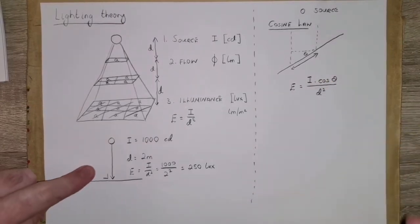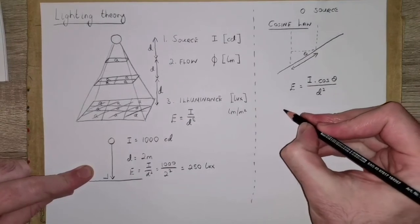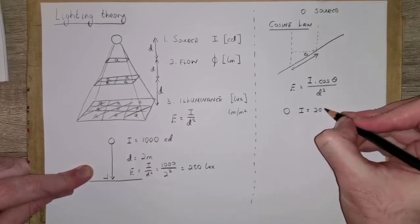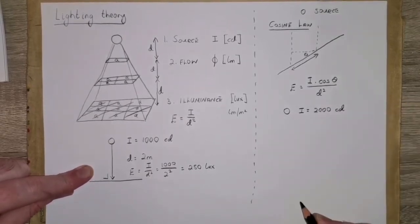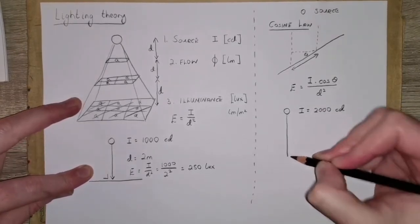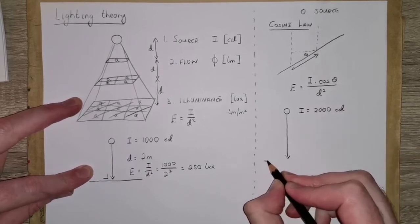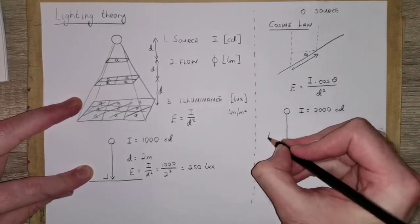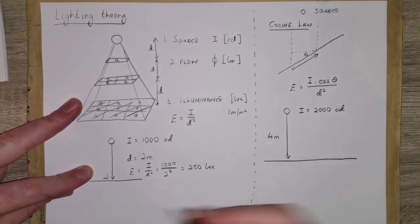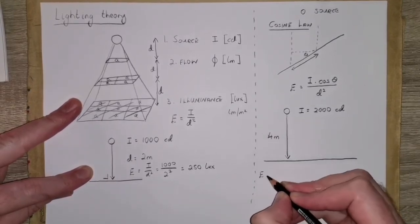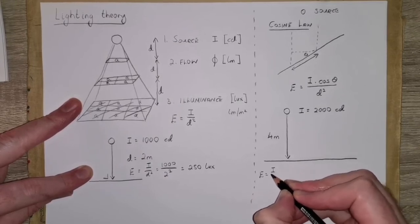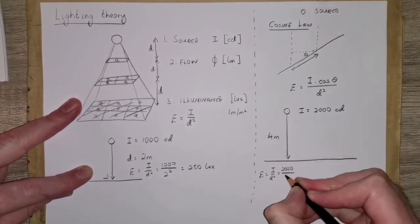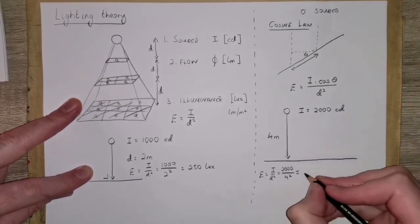Let's assume that we have a source with a luminous intensity of 2000 candela and we want to calculate the illuminance on a surface perpendicular that's 4 meters beneath the source. That's just E = I over d squared, which will be 2000 over 4 squared, and that comes out as 125 lux.